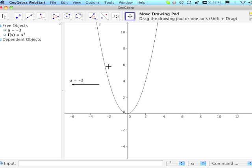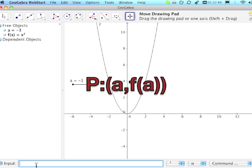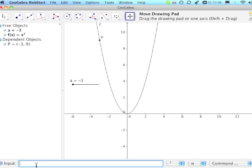I'm now going to plot a point on the function. To plot that point, I'm going down to the input bar. I'm going to label it P, so I'm going to start with a capital P colon, and then a parenthesis. And I'm going to plot a, lowercase a, comma, f of a. And that creates my point P on my function.